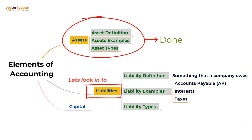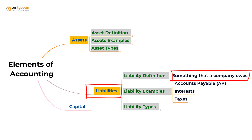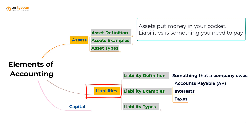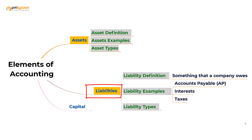Now let's move on to liabilities. Liabilities are something that you owe other parties — meaning something that you're obliged to pay to other parties. As I said before, assets put money in your pocket; liabilities will take money out of your pocket. Examples of liabilities are accounts payable, also referred to as AP, interest, and taxes.